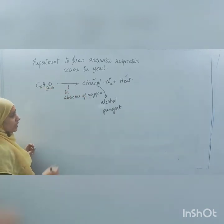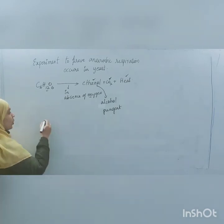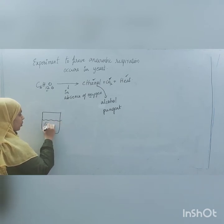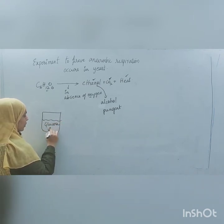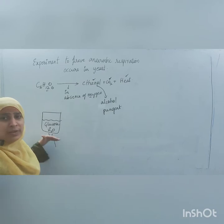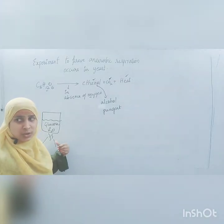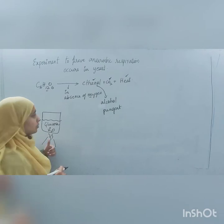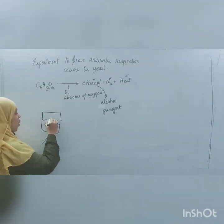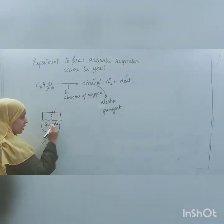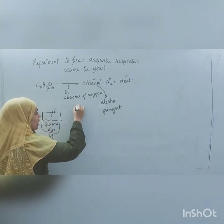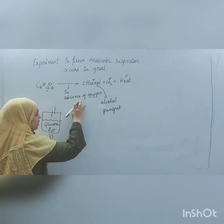For this, we take a beaker with a glucose solution — glucose plus water — and we heat the contents. Whatever oxygen is dissolved in this glucose solution gets evaporated, leaving only glucose and water with no dissolved oxygen.